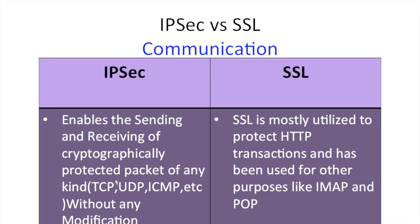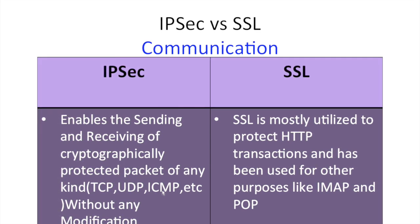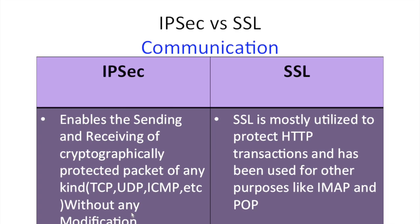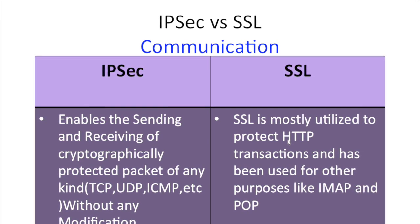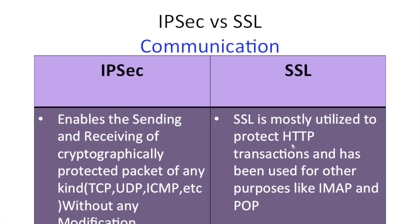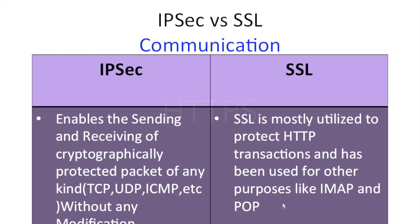For communication, IPSec can communicate with TCP, UDP, ICMP, and others without any modification. SSL mostly works with HTTP — that is HTTP plus SSL — and is also used for protocols like IMAP and POP.